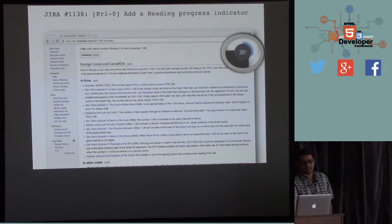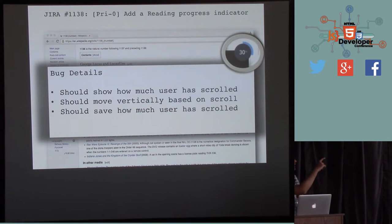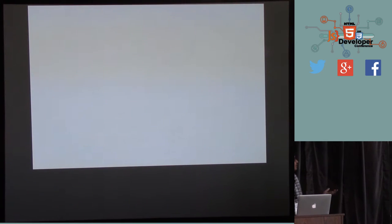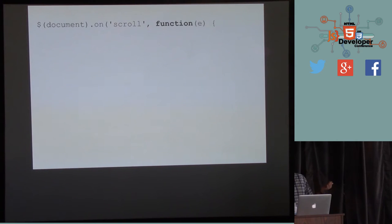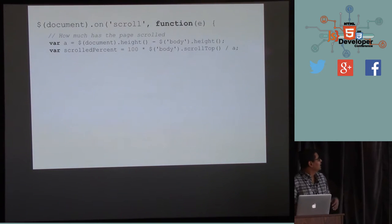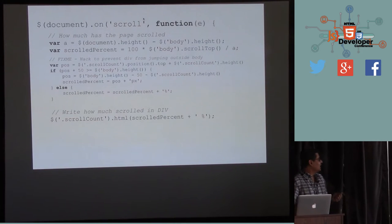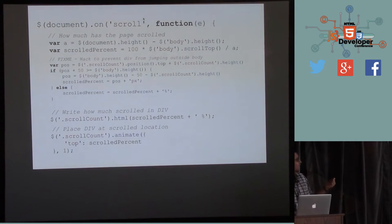We used Jira because it was an enterprise. This bug title was: 'We need to add a reading progress indicator.' The product manager wanted to show how much the user had scrolled, positioned vertically with a percentage. Sure, the scroll bar does something similar, but I'm a developer — I didn't ask questions, I just implemented it. There was a document onscroll handler; those were the days when I mostly knew jQuery. The first thing I did was try to calculate height and position.